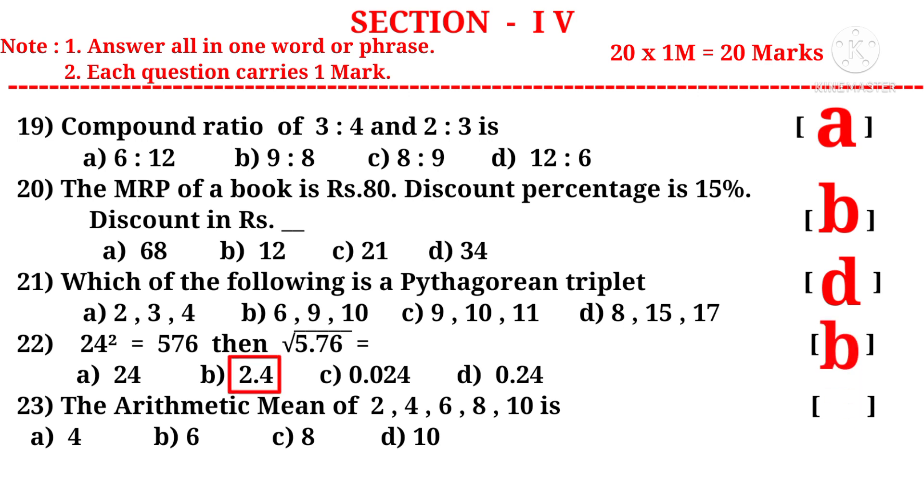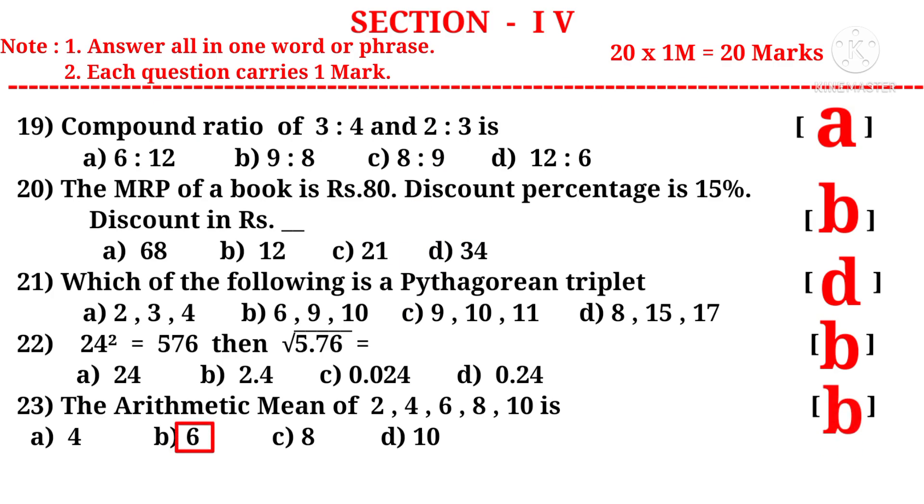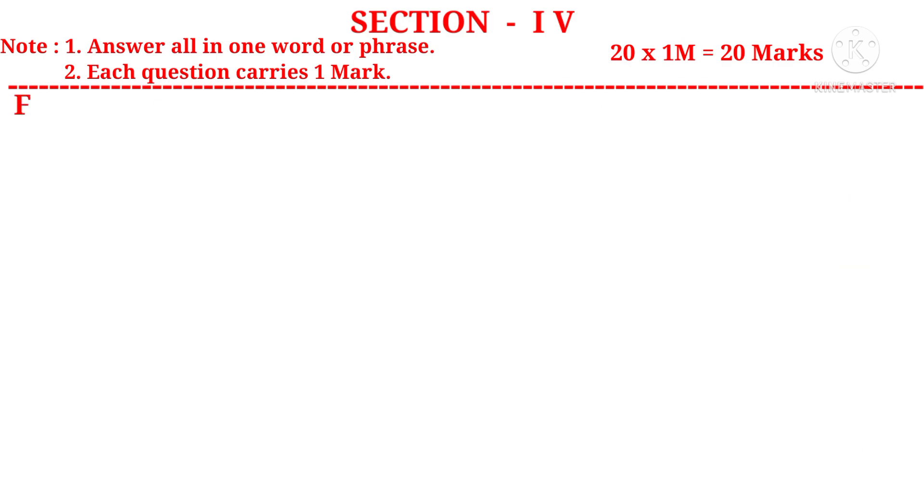Question 23: The arithmetic mean of 2, 4, 6, 8, and 10 is. AM = sum of items / number of items. So (2 + 4 + 6 + 8 + 10) / 5, that is equal to 30 / 5. On simplification by 5: 6 is the answer. The correct choice is B.